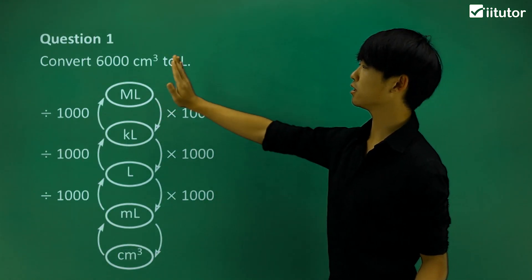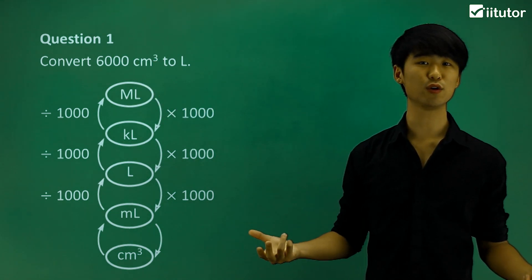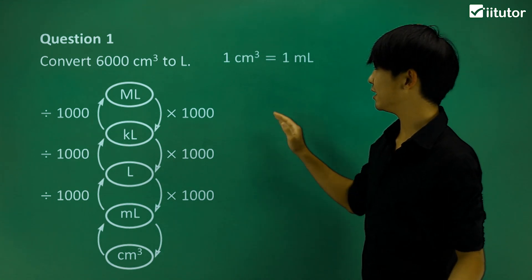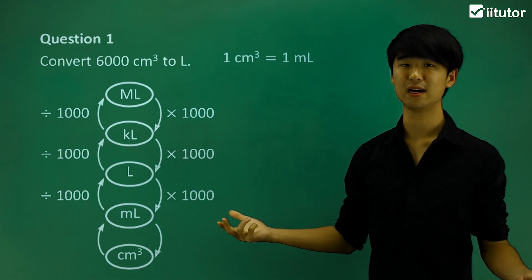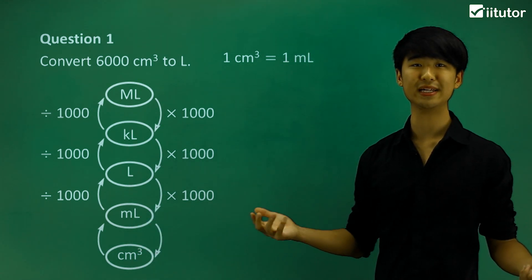So looking at the first one, we're going to convert 6,000 centimeters cubed to liters. So the first thing that I want to note is 1 centimeter cubed will give me 1 milliliter. So we can see that from here. 1 centimeter cubed is 1 milliliter.